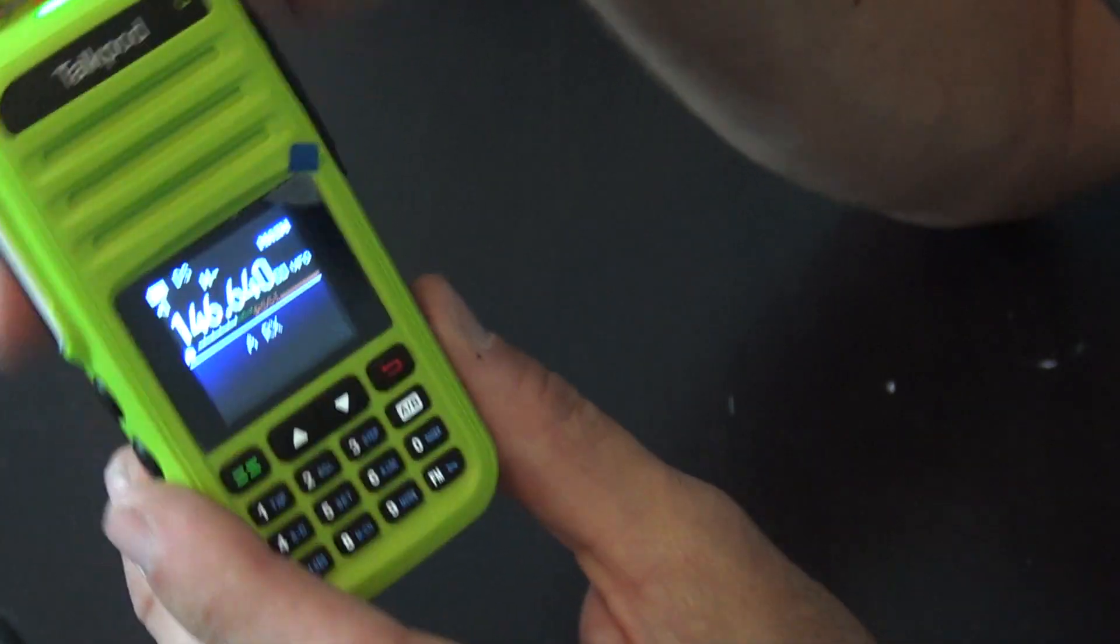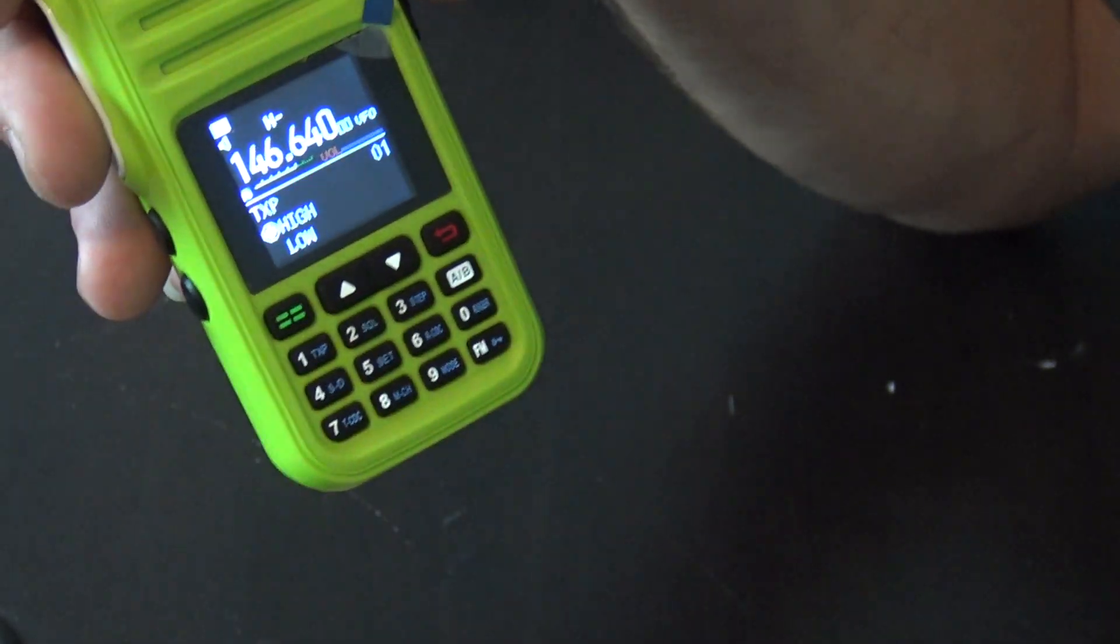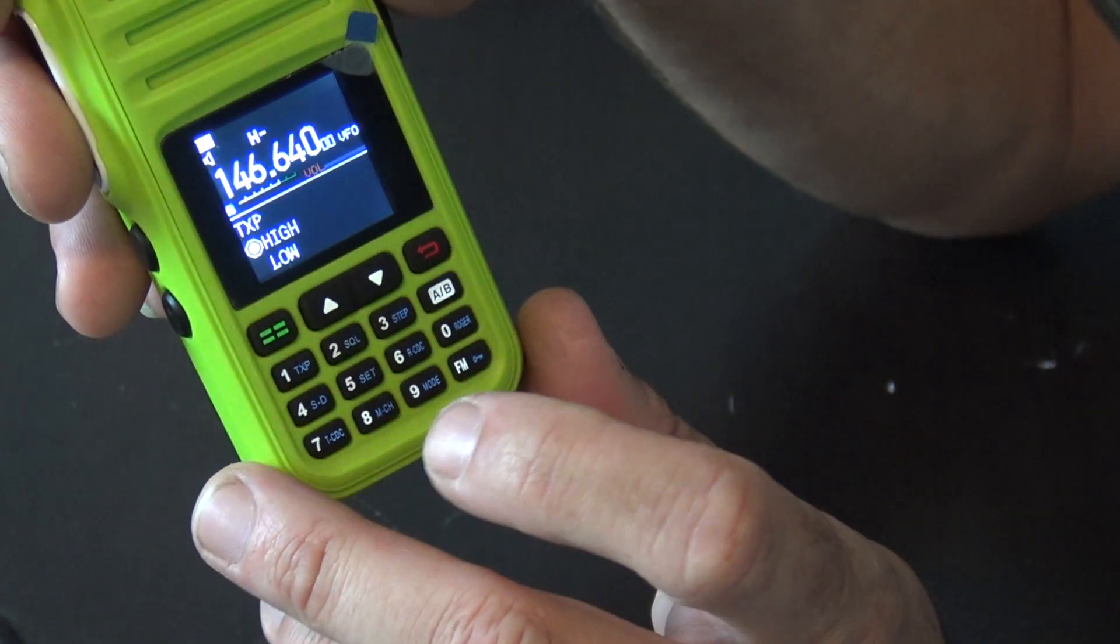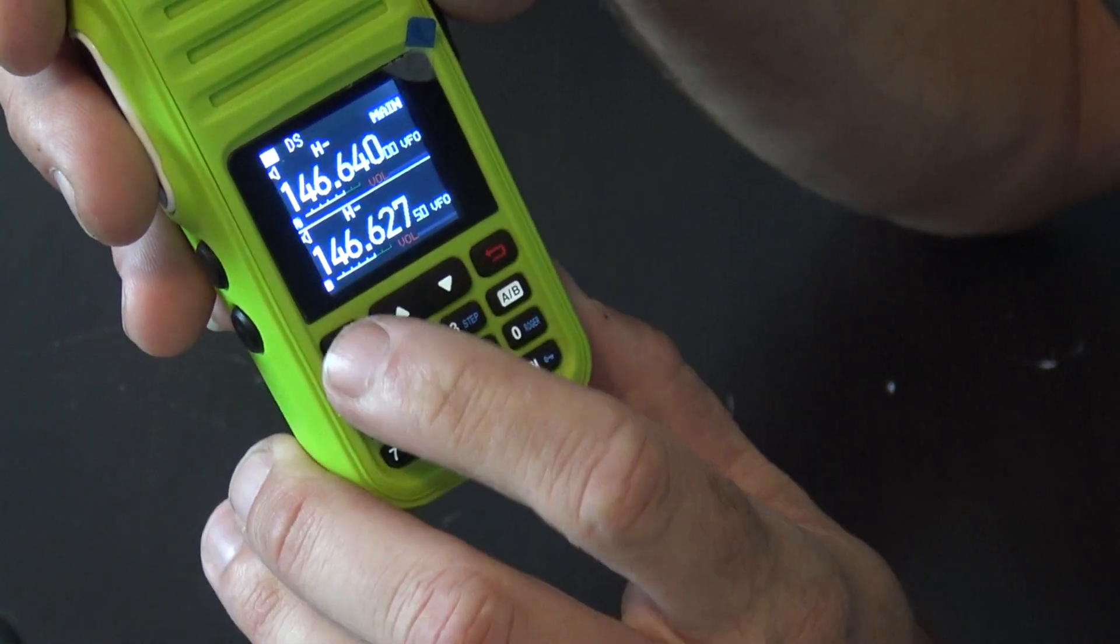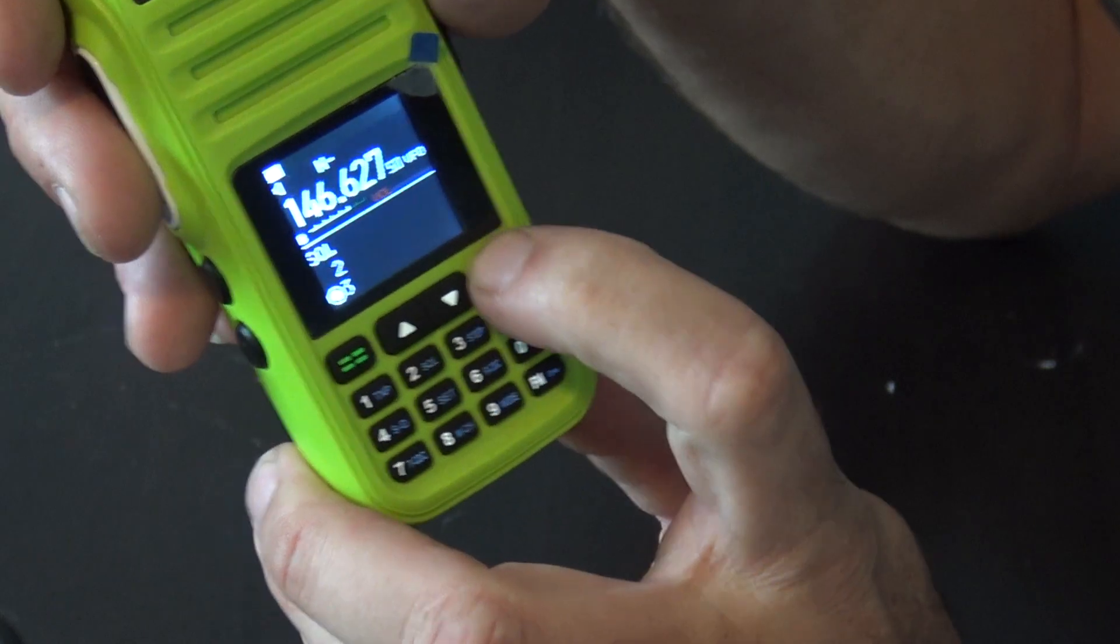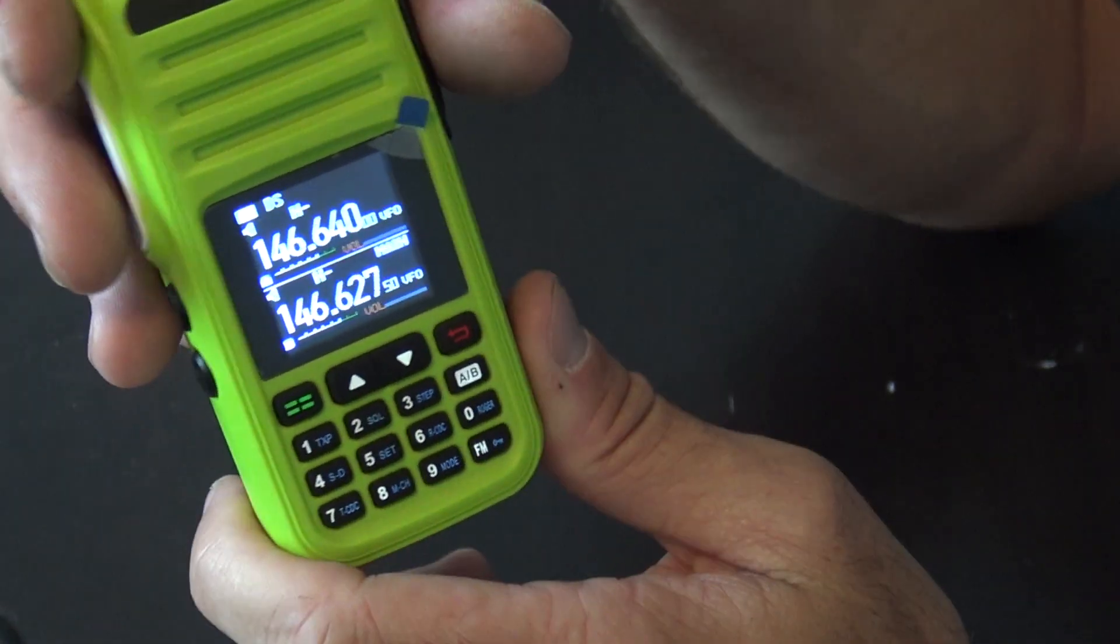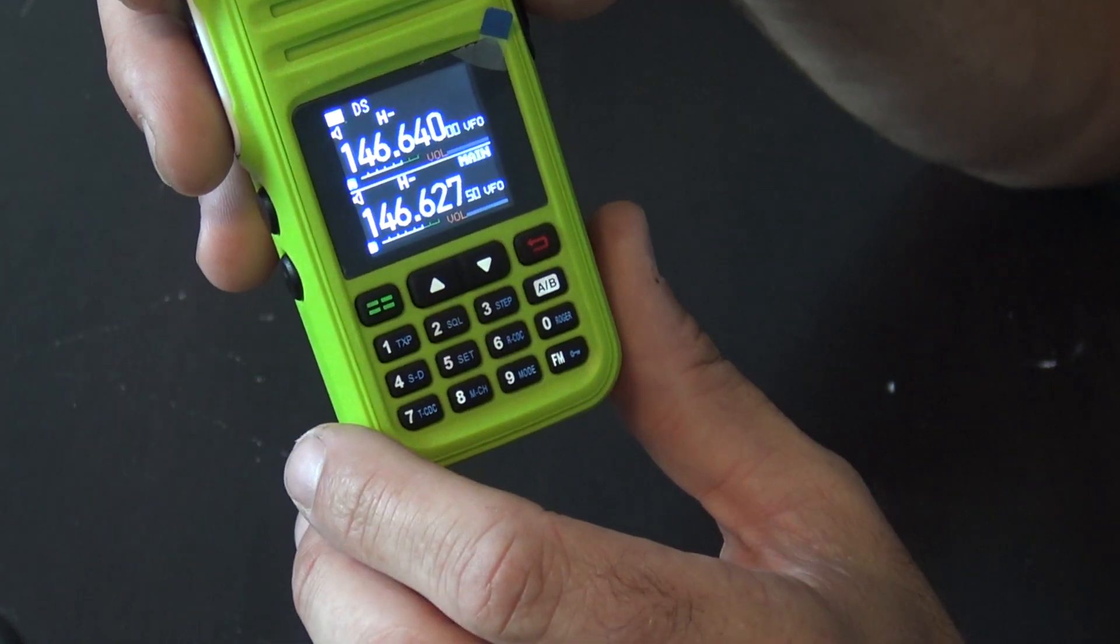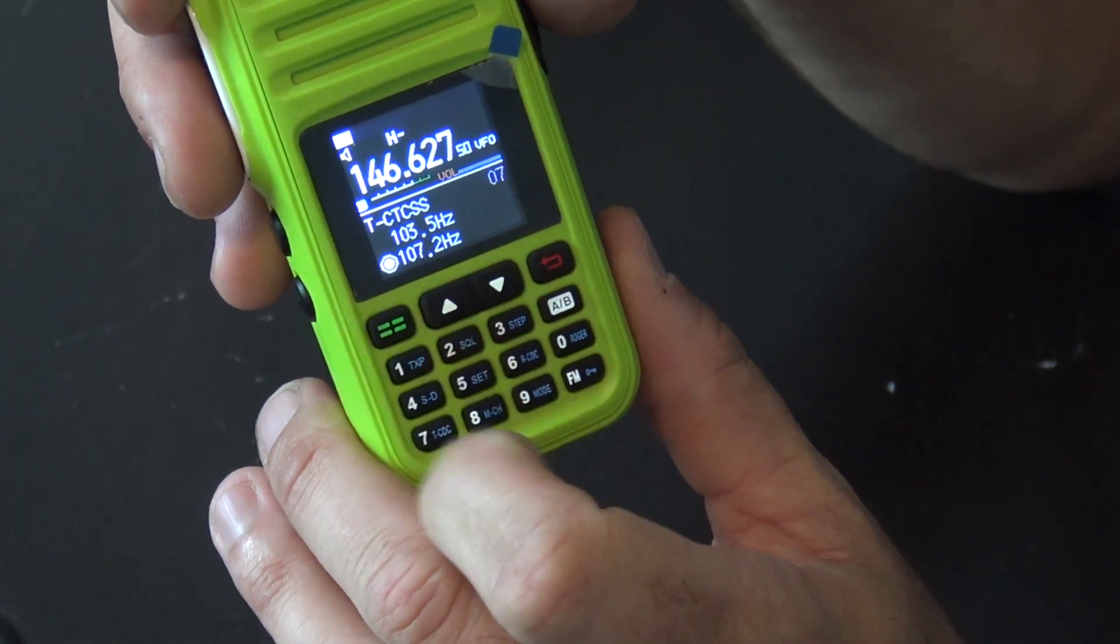Squelch setting, step setting, shift plus or minus, offset. I set this just by my hand. You can look at the shortcut keys here. If you want transmit power, you can hit menu one. If you want your squelch, menu two. What I did was I put in the frequency up top, the receive frequency of the repeater, and then basically I want my CTCSS, which would be seven.